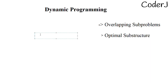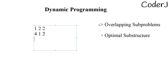To better understand optimal substructure, let's use a popular DP question called minimum path sum. You are given a grid — for example: 1, 2, 2 / 4, 1, 2 / 5, 2, 1. You must traverse from the top-left (source) to the bottom-right (destination), choosing the path with minimum total cost. The numbers represent the cost at each cell. You can only move right or down.